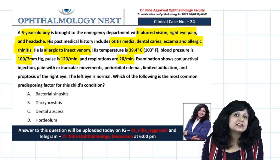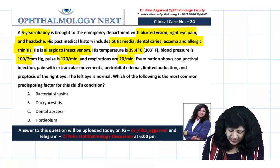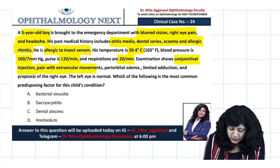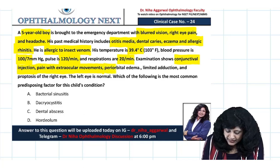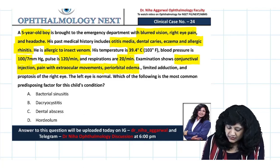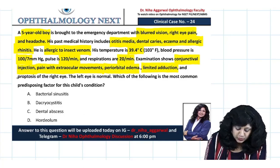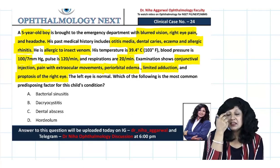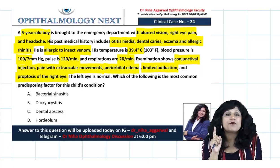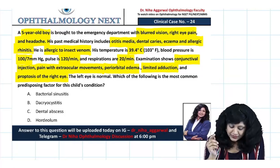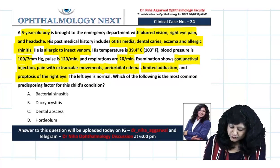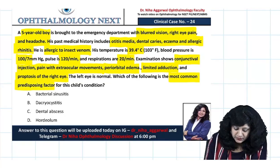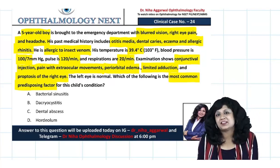On examination we have conjunctival injection, pain with extraocular movements, periorbital edema, limited adduction, and also proptosis of the right eye. They are telling you proptosis of one eye, that is the right eye, while the left eye is normal. Which of the following is the most common predisposing factor for the child's condition?